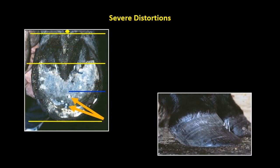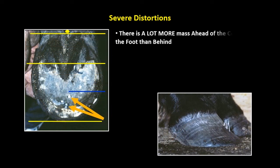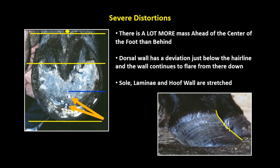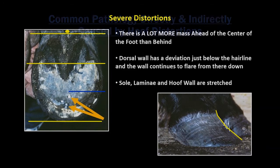Severe distortions: There is a lot more mass ahead of the center of the foot than behind. The dorsal wall has a deviation just below the hairline and the wall continues to flare from there down. Sole, lamina, and hoof wall are stretched.